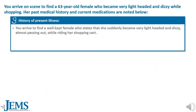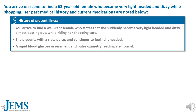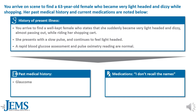You arrive on scene to find a 63-year-old female who became very lightheaded and dizzy while shopping, nearly passing out in her shopping cart. She presents with a slow pulse and continues to feel lightheaded. Rapid blood glucose assessment and pulse oximetry readings are normal. Her past medical history is significant for glaucoma, hypertension, and osteoarthritis.